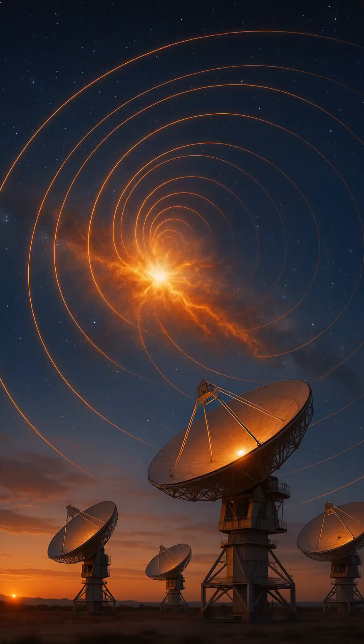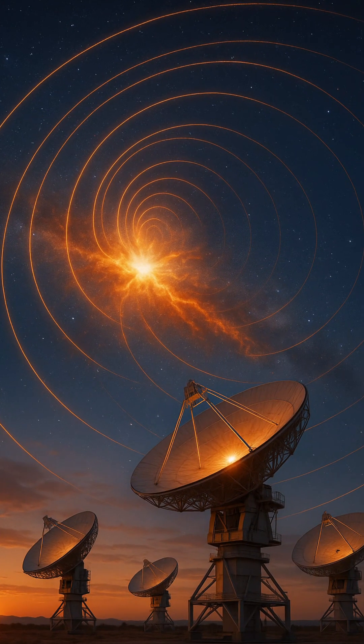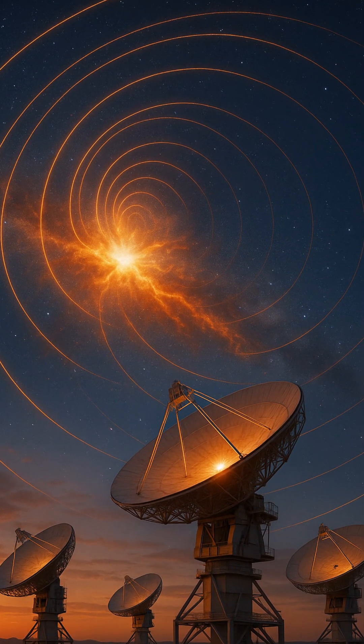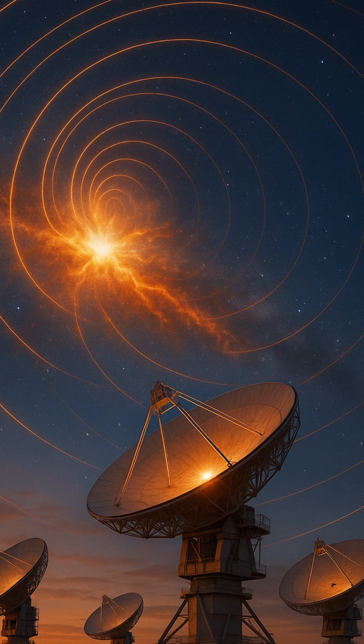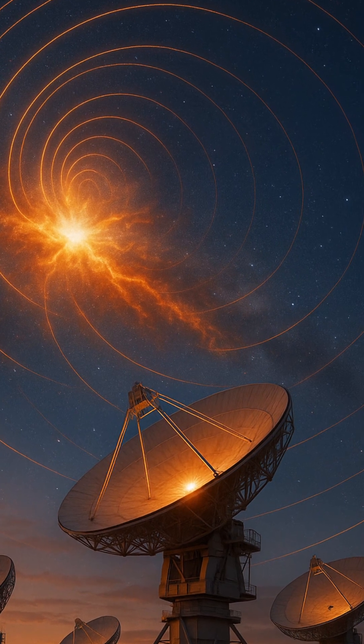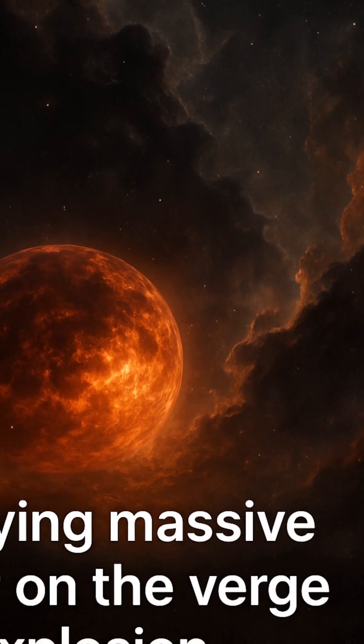Radio telescopes map the distribution of hydrogen. X-ray telescopes detect the hot remnants of supernovae. Each frequency unveils a different piece of the puzzle, helping astronomers understand how galaxies evolve.